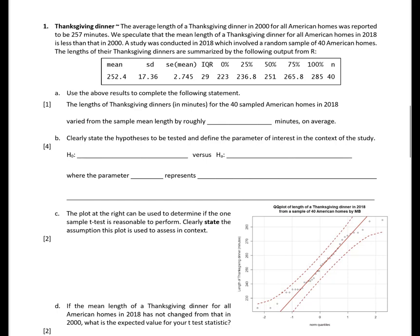Okay, let's walk through page one of the exam. Thanksgiving dinner. The average length of a Thanksgiving dinner in 2000 for all American homes was reported to be 257 minutes. We speculate that the mean length of a Thanksgiving dinner for all American homes in 2018 is less than that in 2000. A study was conducted in 2018 which involved a random sample of 40 American homes. The lengths of their Thanksgiving dinners are summarized by the following output from R.